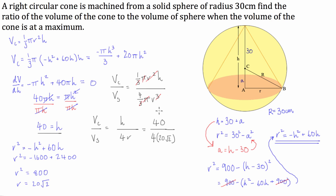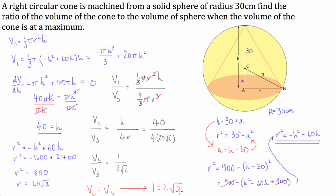Simplifying, 40 over 80 root 2 gives one over 2 root 2. So the volume of the cone as a ratio of the volume of the sphere is 1 to 2 root 2. As you can see, the problem is mainly algebra with a small fraction of differentiation. I hope it helped and I'll see you next time.